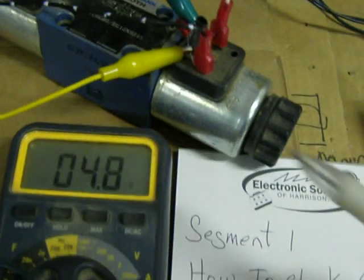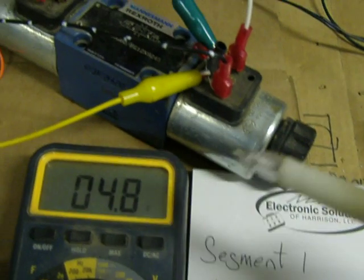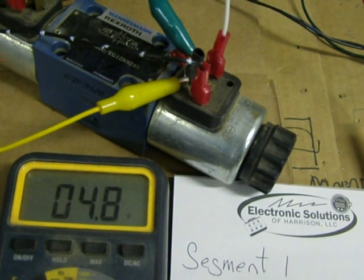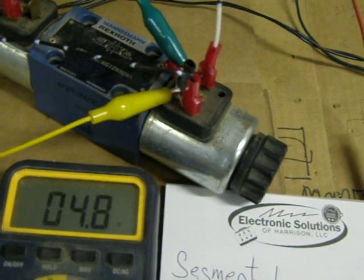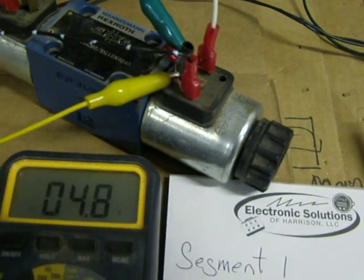So when in doubt, check it with an ohm meter, check it with an amp test, put an inline amp meter in line with it. Should only draw 2.5 amps. Check it on the machine side. If you've got any questions, give me a call. I'll be glad to help you. Thanks. See ya.